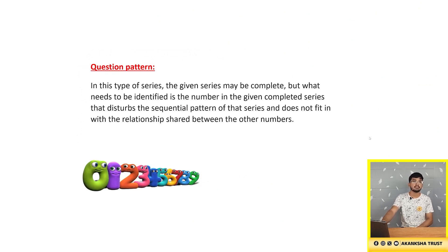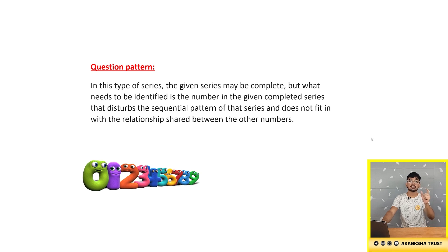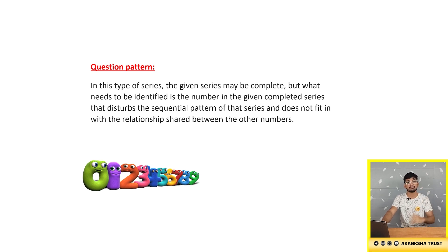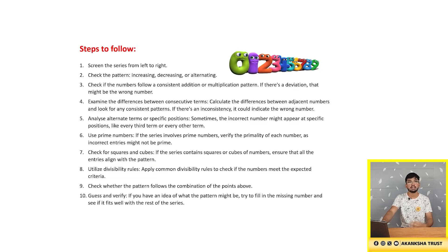The question pattern will be like this. In this type of series, the given series may be complete, but we need to identify the number which is wrong or which has a problem and disturbs the sequential pattern of the series and does not fit in with the relationship shared between the other numbers. We'll learn about the steps to follow while we solve the problem itself.